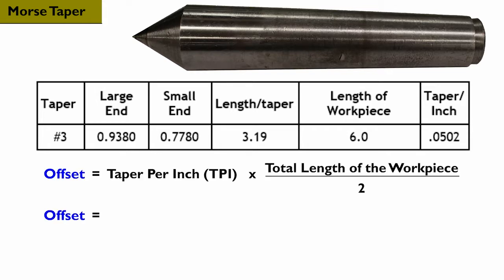Remember, when the TPI measurement is known, this is the offset calculation. For this project, our offset calculation is 0.150 inches.